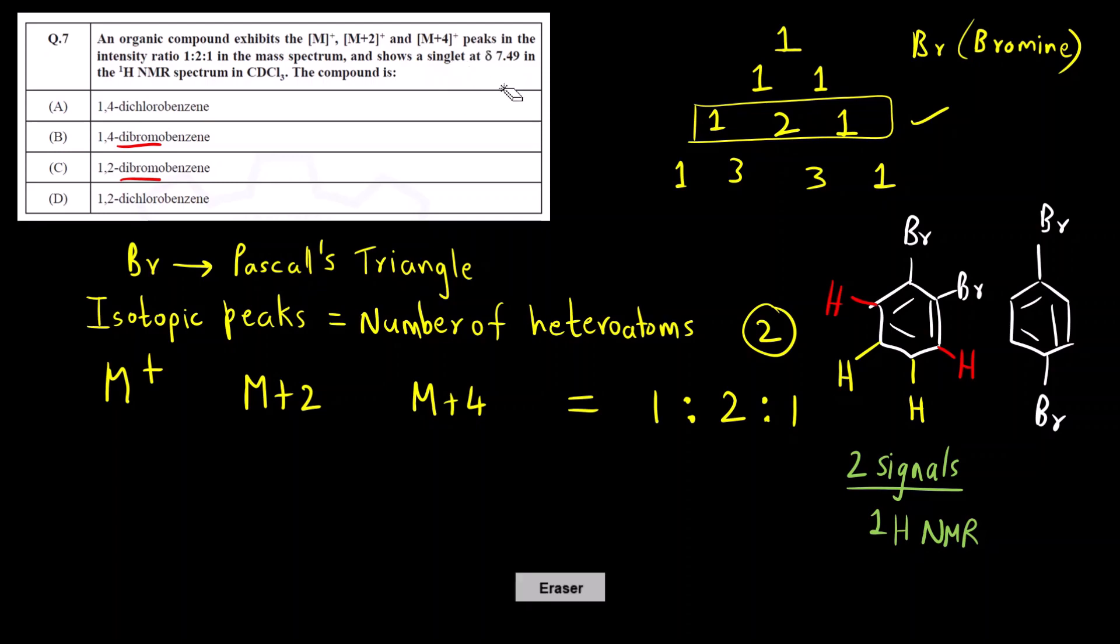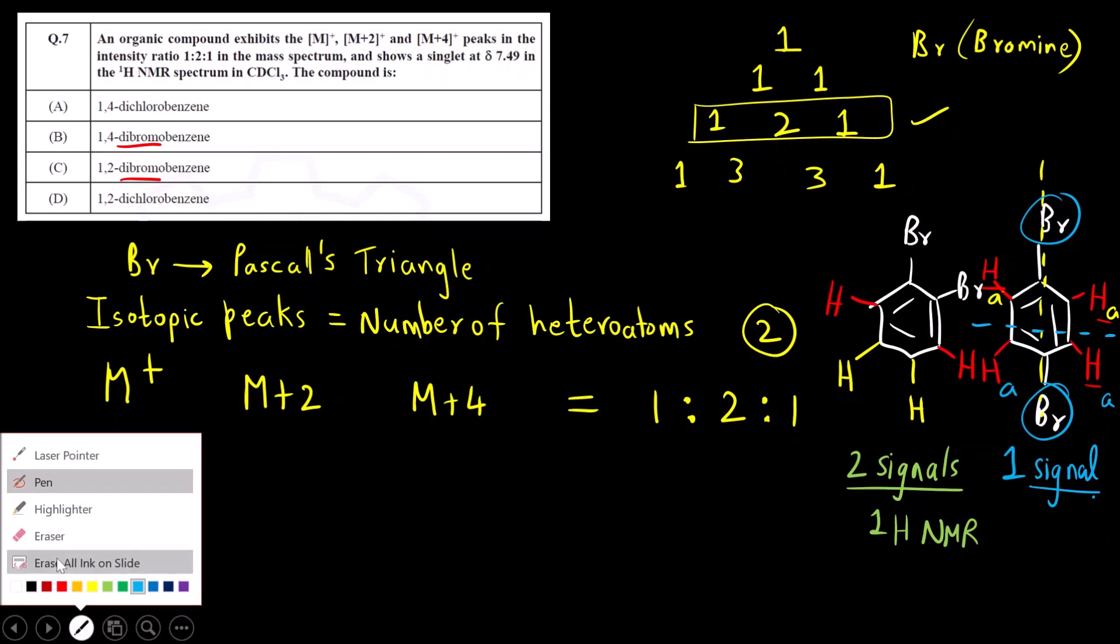But in the question if you see they have given that we get only one singlet at 7.49, so only one signal is seen that is a singlet. So this 1,4 product is the correct answer - 1,4-dibromobenzene is the correct compound because here if you see all the four hydrogens are in same chemical environment. How did I come to know? You first draw the plane of symmetry like this. Let's say this is HA, HA, this is HB and HB. This is one plane of symmetry. Now we can also draw a plane of symmetry like this - above there is bromine, below also there is bromine. So this HA and HB are also equivalent. So all the four hydrogens are in the same chemical environment. So here we will get one signal. So the correct answer here will be 1,4-dibromo compound.